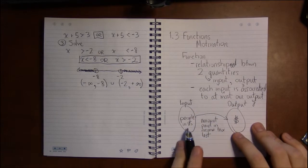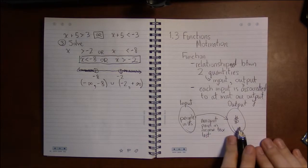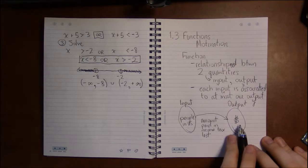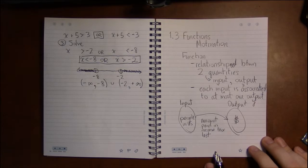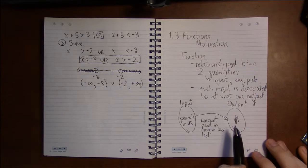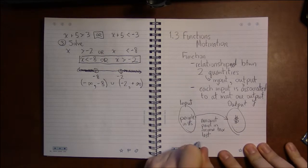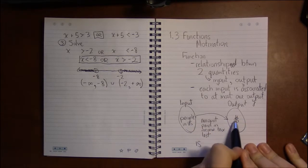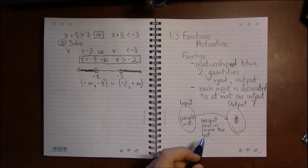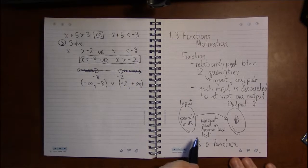Now, it has to be the case that in order to be a function, each person, each X in this input, has exactly one Y value. So could it be the case that a person has two different amounts that they pay for income tax? Well, no. That's ludicrous. Each person pays exactly one correct figure in income tax. So this is a function because each person pays only one amount, one specific amount of money for income tax. They don't have multiple payments.